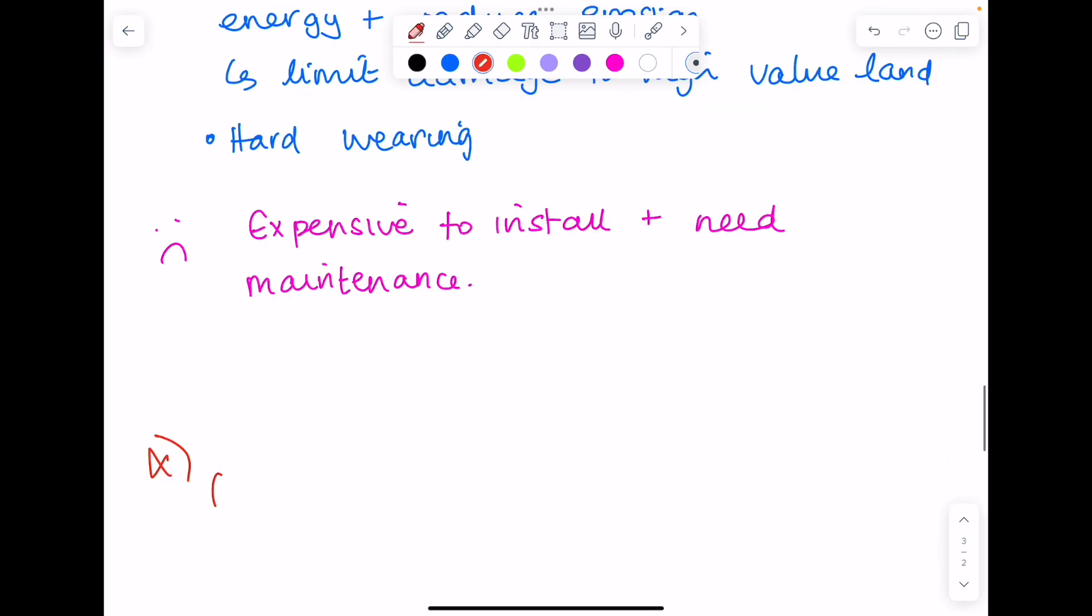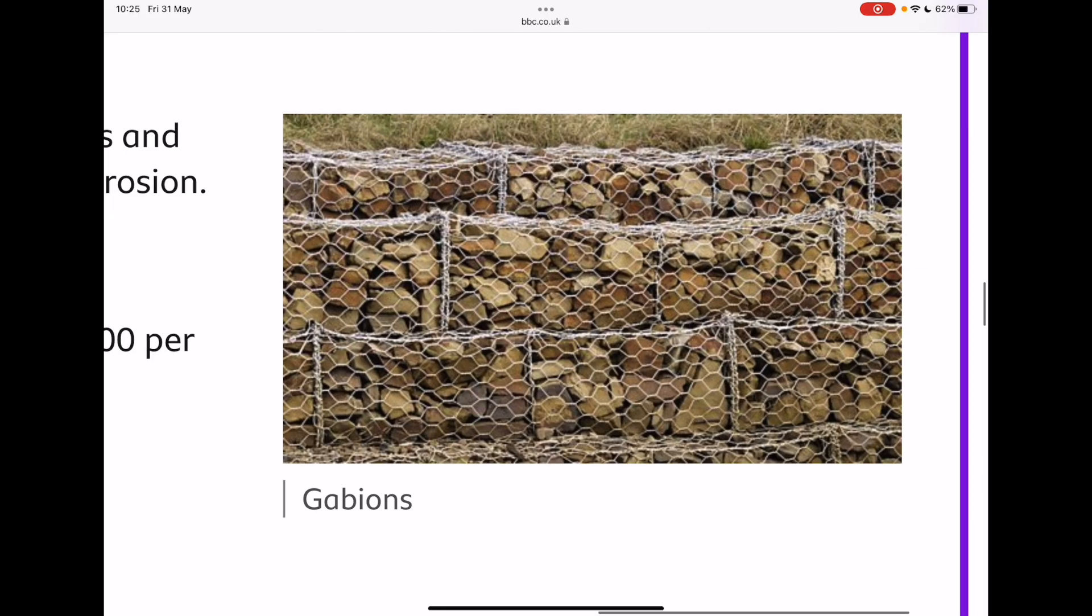Gabions. Now here's a gabion. You can see that a mesh work is created, usually out of steel, and that these will contain rocks. Again, the thought process behind this is that it will help absorb the wave's energy and prevent erosion.